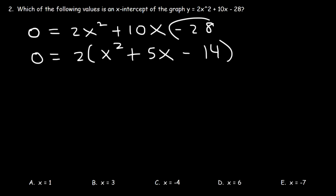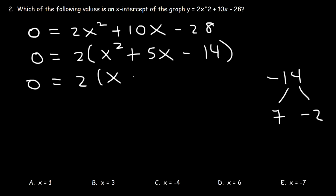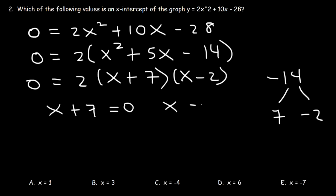That should be negative 14, since negative 28 divided by 2 is negative 14. We need two numbers that multiply to negative 14 and add to 5: that's 7 and negative 2. So it factors to (x + 7)(x − 2). Setting each factor to zero gives x-intercepts of positive 2 and negative 7. Since positive 2 is not an answer choice, the answer is negative 7.